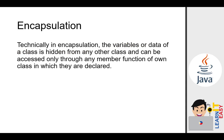Technically, in encapsulation the variables or data of a class are hidden from any other class and can be accessed only through member functions of the class in which they are declared. When we perform encapsulation, we can hide data members and methods from other classes that access them. We do this for security — not everything about you should be exposed — and as an object, there's no need to show others what components are inside. What's important is knowing how to use it and whether it works.